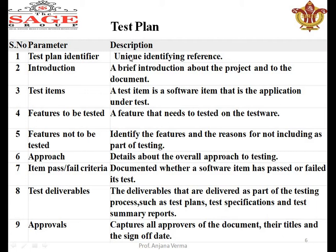Every test plan will have an identifier, an introduction describing what we are going to do in the test plan, what items are to be tested, what features are to be tested and what are not to be tested, and what is the approach for testing — for example, if we are doing unit testing, whether we are making a cyclomatic graph or checking independence paths. After that, the pass or fail criteria for items will be decided in advance, along with test deliverables, approval dates, and sign-offs before the software goes for service.